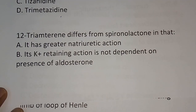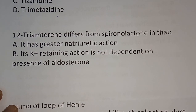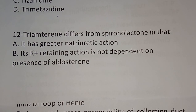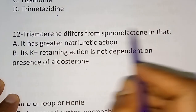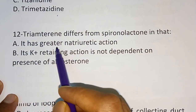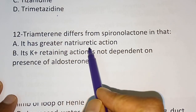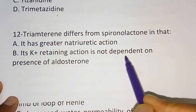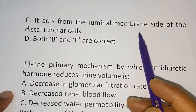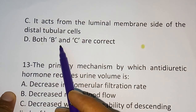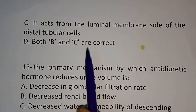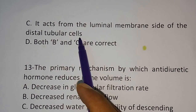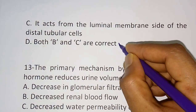Question number twelve: Triamterene differs from spironolactone in that? Option A: It has greater natriuretic action. Option B: Its potassium-retaining action is not dependent on the presence of aldosterone. Option C: It acts from the luminal membrane side of the distal tubular cells. Option D: Both B and C are correct. The correct answer is Option D — both B and C are correct.